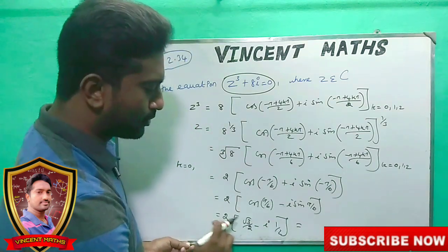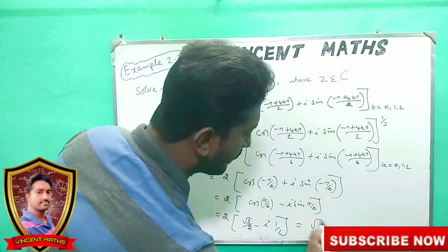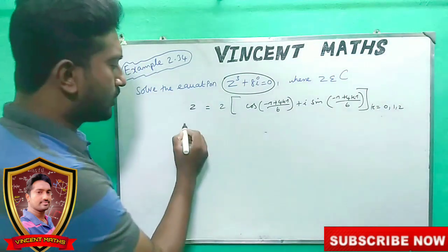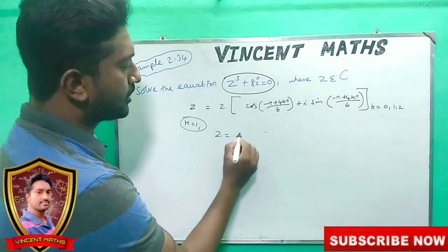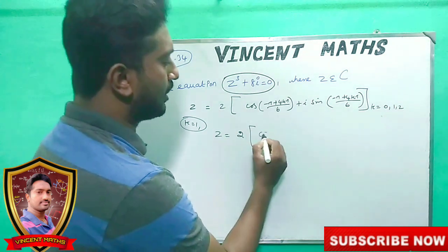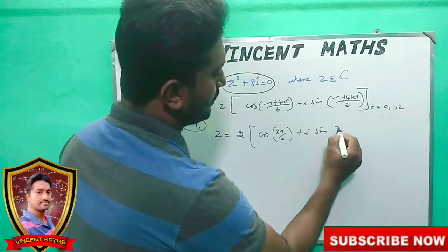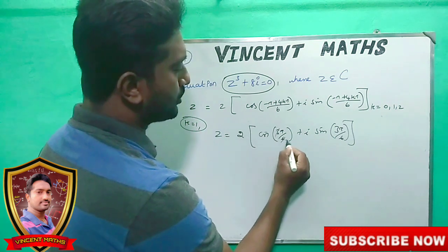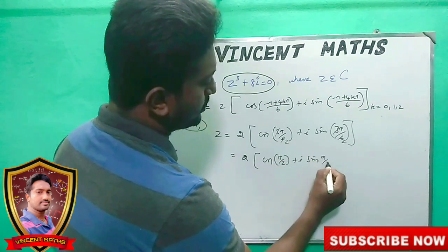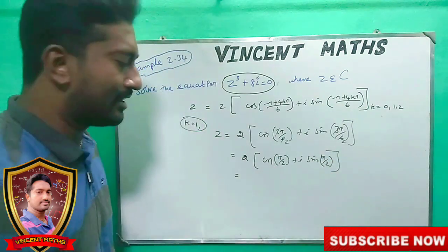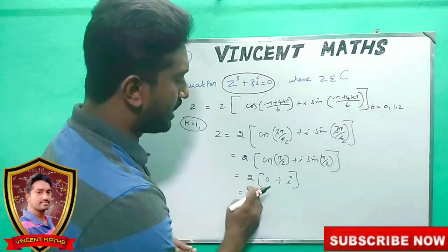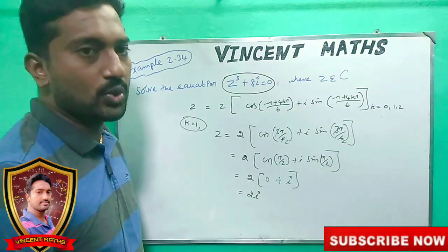For k = 0: z = 2·[cos(−π/6) + i sin(−π/6)] = 2·(√3/2 − i·1/2) = √3 − i. For k = 1: substitute k=1 giving cos(π/2) + i sin(π/2), so z = 2·(0 + i) = 2i.